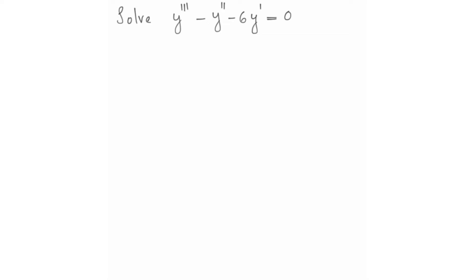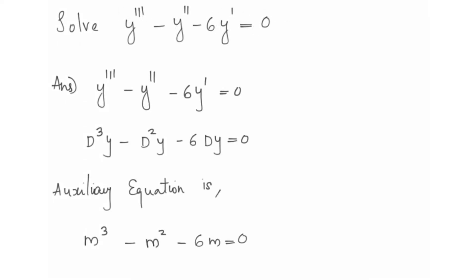Solve: y''' - y'' - 6y' is equal to 0. Using the differential operator: d³y - d²y - 6dy equals 0. The auxiliary equation is m³ - m² - 6m equals 0.